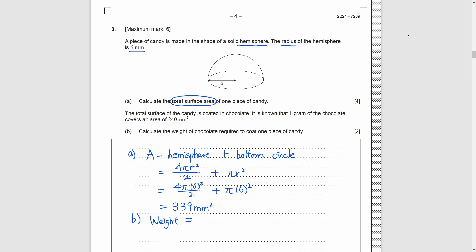Part B, we need to calculate the weight. And we know that 1 gram is equal to 240 mm square. So, we just need to use our answer in part A, divided by 240. The answer is 2.21 gram.